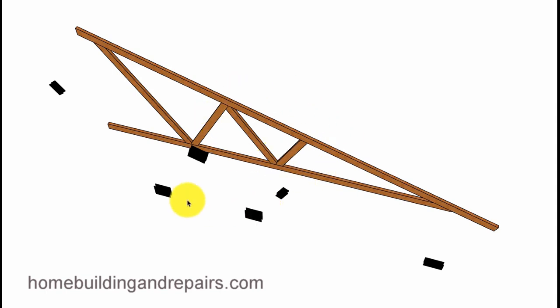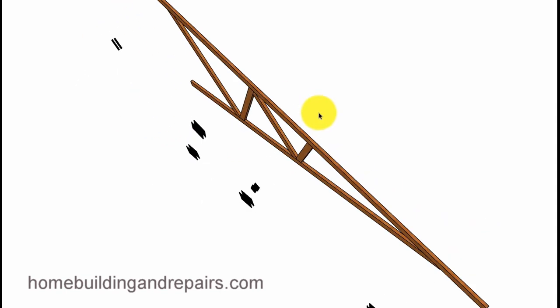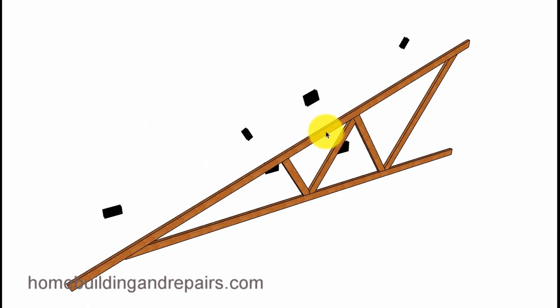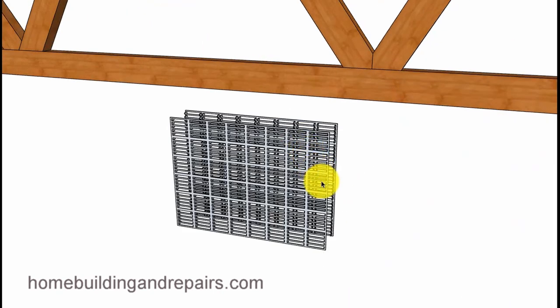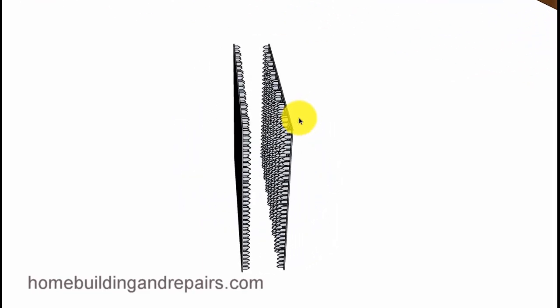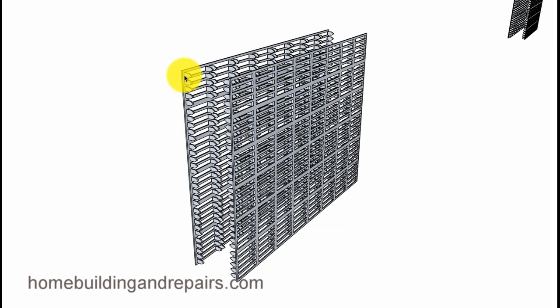They usually have metal connectors like these. I kind of separated it here to give you an idea what it would be like. These are usually referred to as mending plates, that's usually how you find them, but they can also be referred to as truss connectors. They're usually pieces of metal with little pointed things sticking out of them. You can see where there's one on each side. They have a machine that stamps them out and creates the little points there.